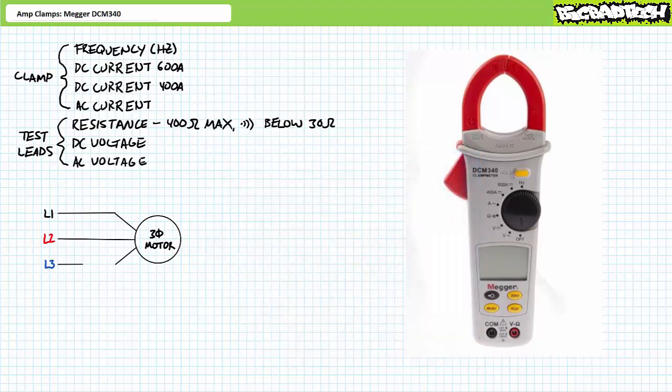In addition to these modes, the Mega DCM340 includes an array of additional functions, including a data hold function, as well as a backlit display if you find yourself working in the dark, a min-max button, a peak button, and a zero function used for relative measurements.